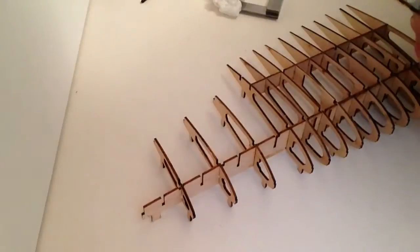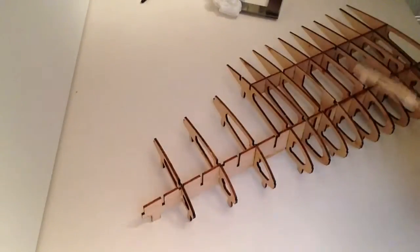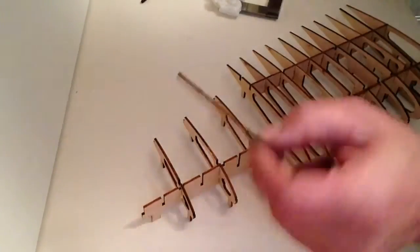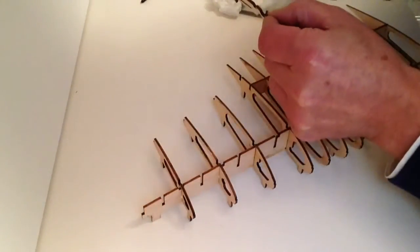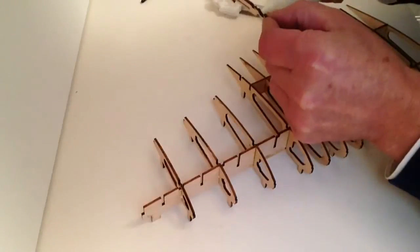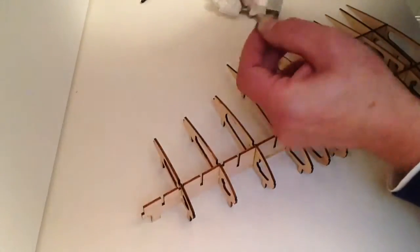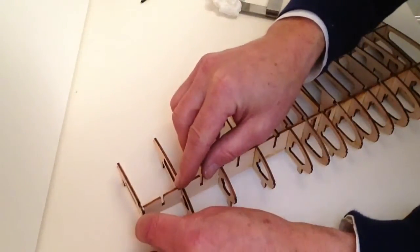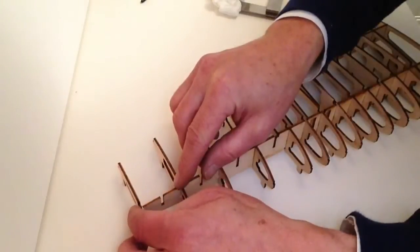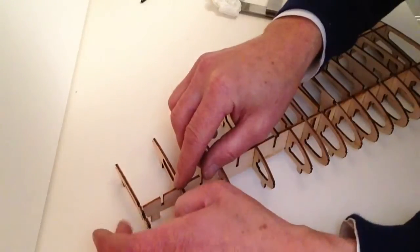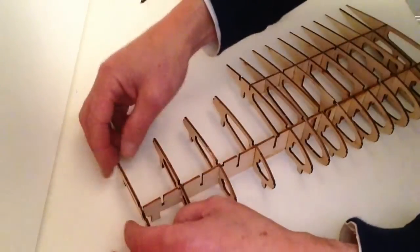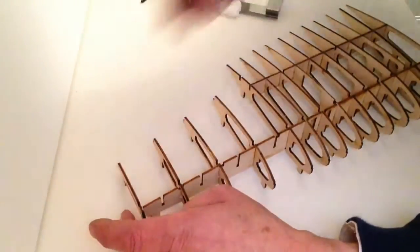Once that is dry, take rib 10—we're going to be placing it on the end of the spar. Take some glue, apply it to where the spar will be glued, and place it on the end here, making sure the little lugs it sits on are positioned nicely. Allow that to dry.